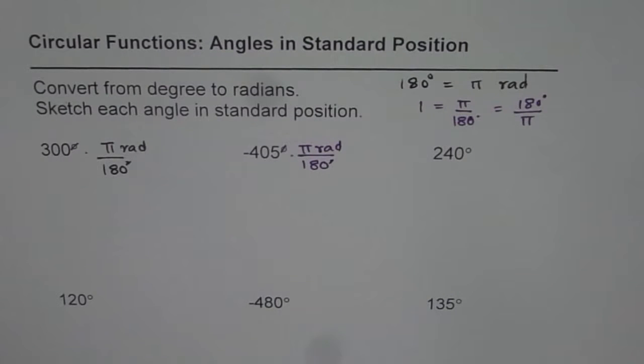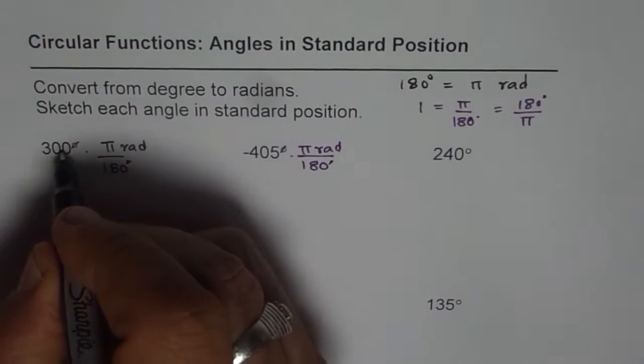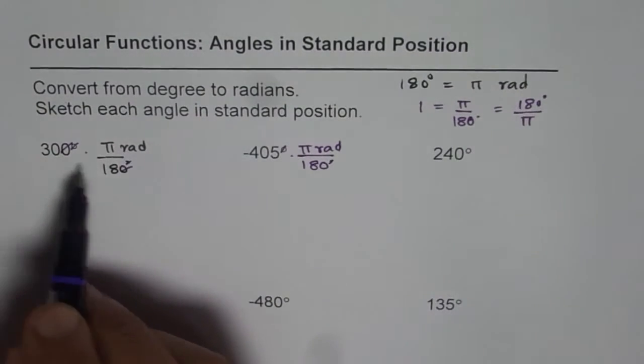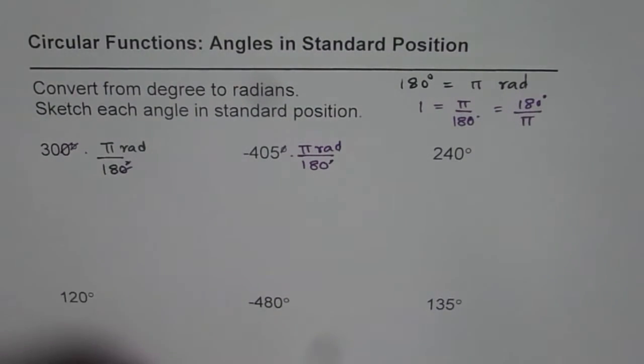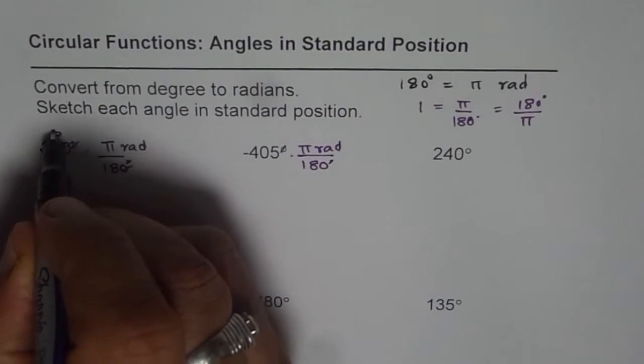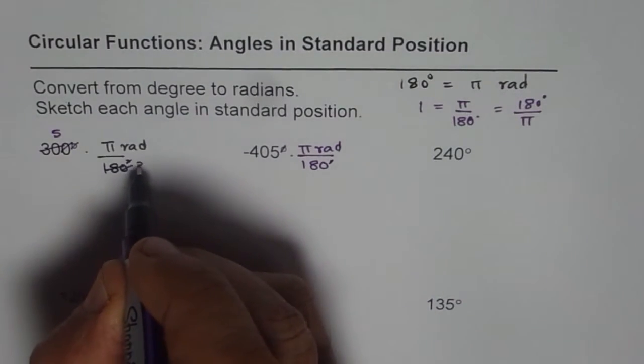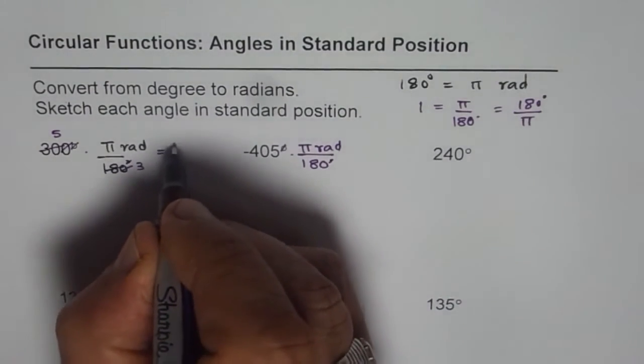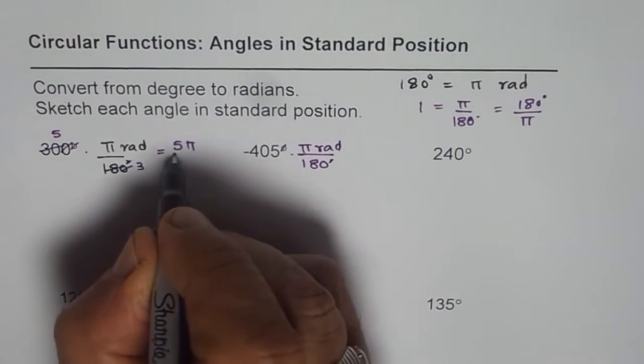Now, second step, simplify. So when you simplify, let us divide by 10. We are left with 30 over 18. Both can be divided by 6. We get 5 here and 6 goes 3 times. With the result, we get 5 pi over 3.